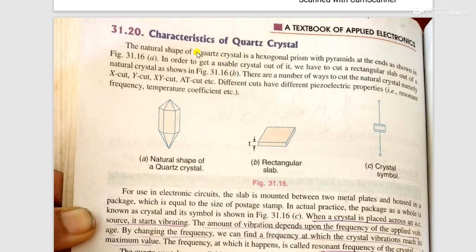Here we can see quartz crystal characteristics. The natural shape of a quartz crystal is like a diamond. We cut it into a slab having a thickness and size in a rectangular shape. Then this rectangular slab is placed between two metallic bodies. Symbolically, we show this quartz crystal as a square with two capacitors. It's called a crystal symbol.